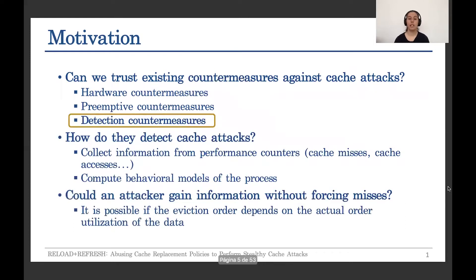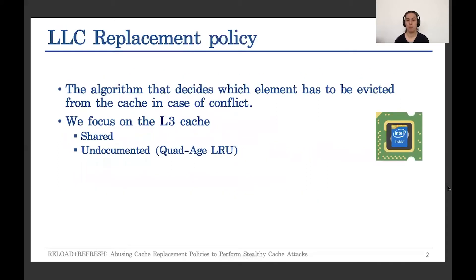But can the attacker gain information from the gas without forcing misses? The answer seems to be yes, but only if the eviction of the data depends on the utilization of the data. This is why we focus on the replacement policy — the algorithm that decides which element is going to be evicted from the gas in case of conflict — and in particular, we focus on the last-level caching.